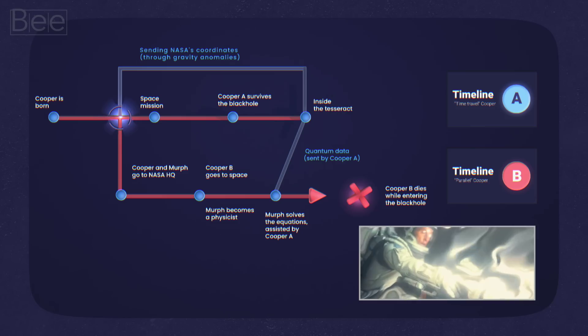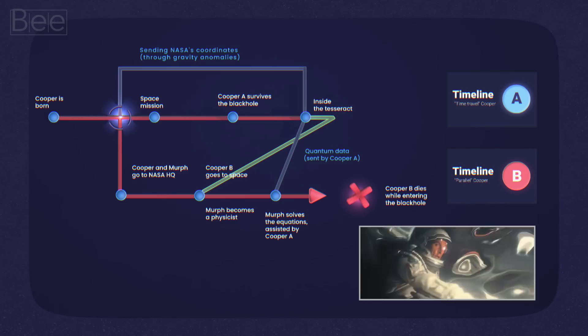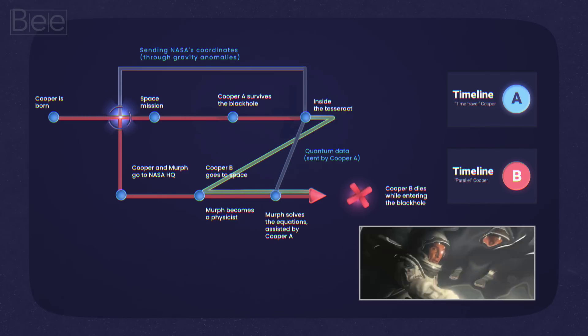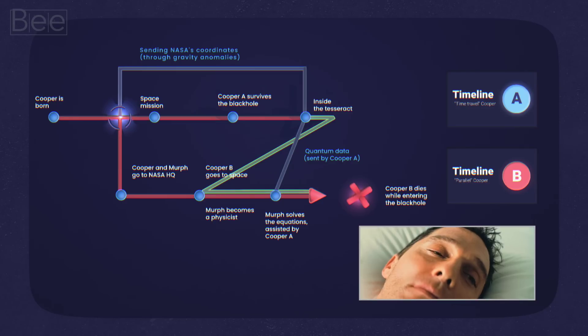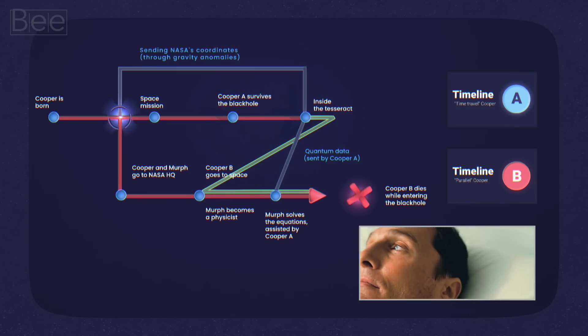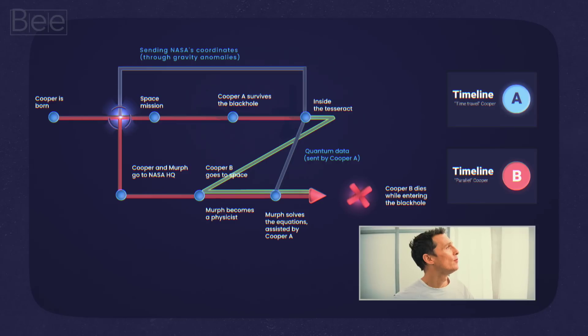He makes contact with the spaceship and Dr. Brand. In our timeline, this is how it looks. This path represents the idea of traveling between the two different realities. Cooper A goes to timeline B, the timeline where basically, not his origin timeline.